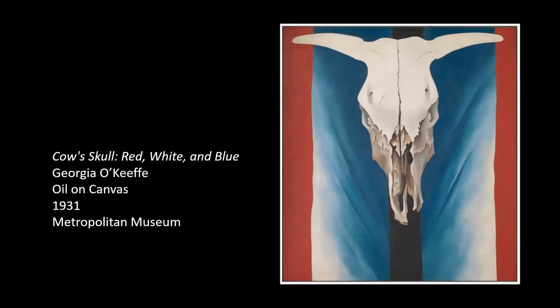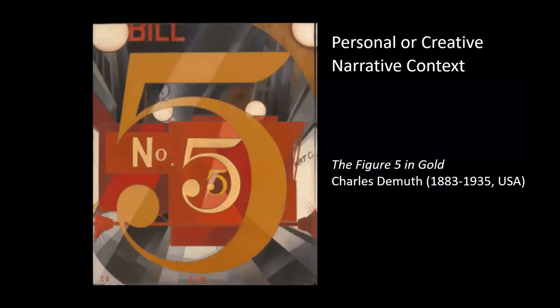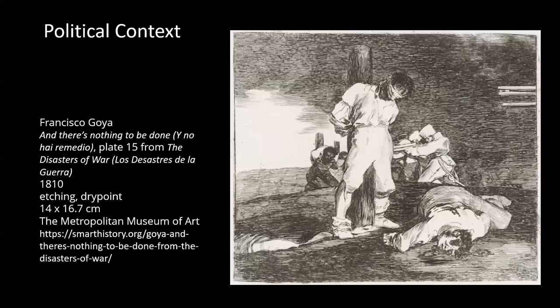We also have Cow's Skull: Red, White, and Blue by Georgia O'Keeffe. If there's a 20th century artist who is incredibly well known and painted from a very individualistic standpoint, it's O'Keeffe. She's not really trying to convey a specific meaning or tell a certain story — it's probably a kind of celebration of the landscape she loved in New Mexico. You almost have to see something like this as a sort of poem, where it might not convey a larger story, or it might be the sort of thing that's very difficult to convey in words.